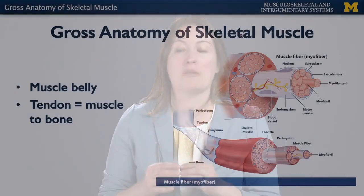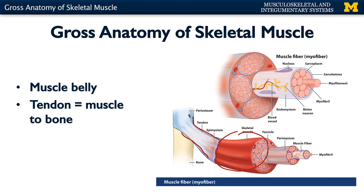When you're talking about a skeletal muscle, there are typically two main components. You have the muscle belly, which is what we typically think of when we're thinking of a muscle, and then you have the tendon. Remember when we were talking about ligaments — ligaments mean bone to bone; tendon is muscle to bone. This is where the connective tissue continues from the muscle belly and actually attaches to the bone.